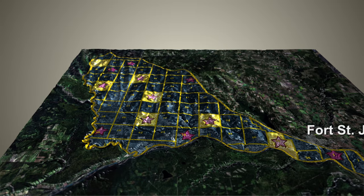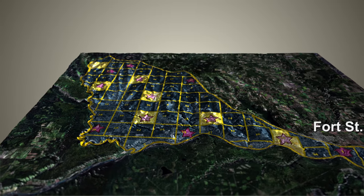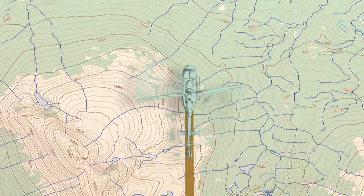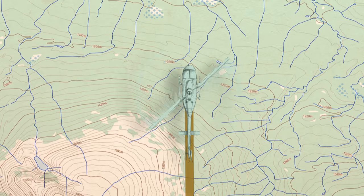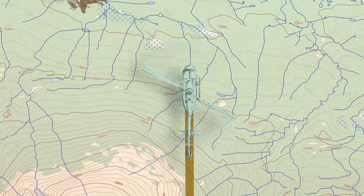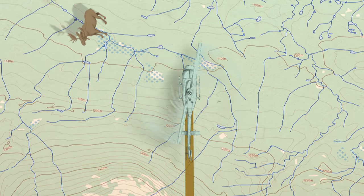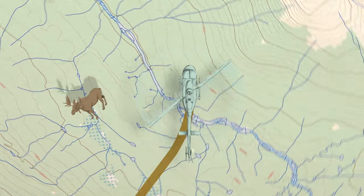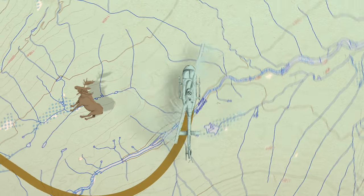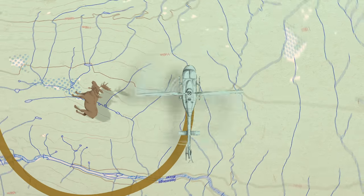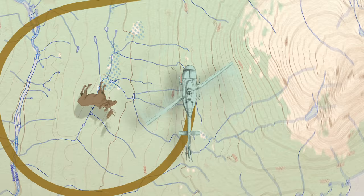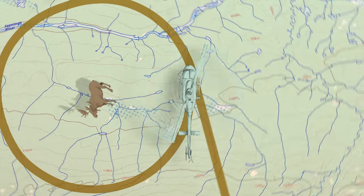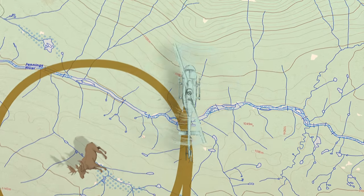Then we fly over those blocks and count all the moose we can see. We try to find all the moose in the block, spending more time in areas with denser cover and less time in open areas, or circling back to where we've seen tracks. When someone spots a moose, we circle it to record its location, gender, and age before continuing on.